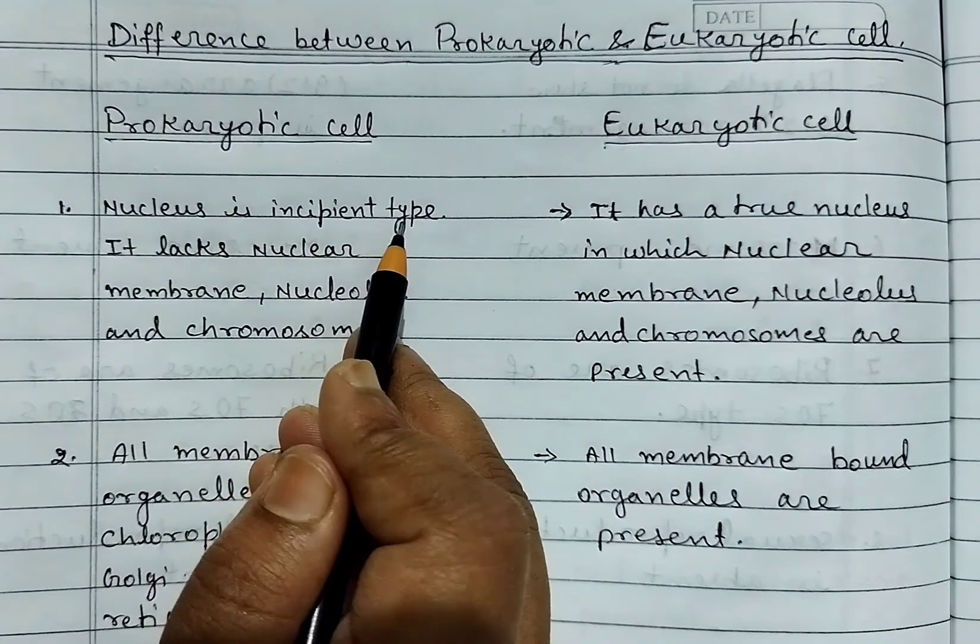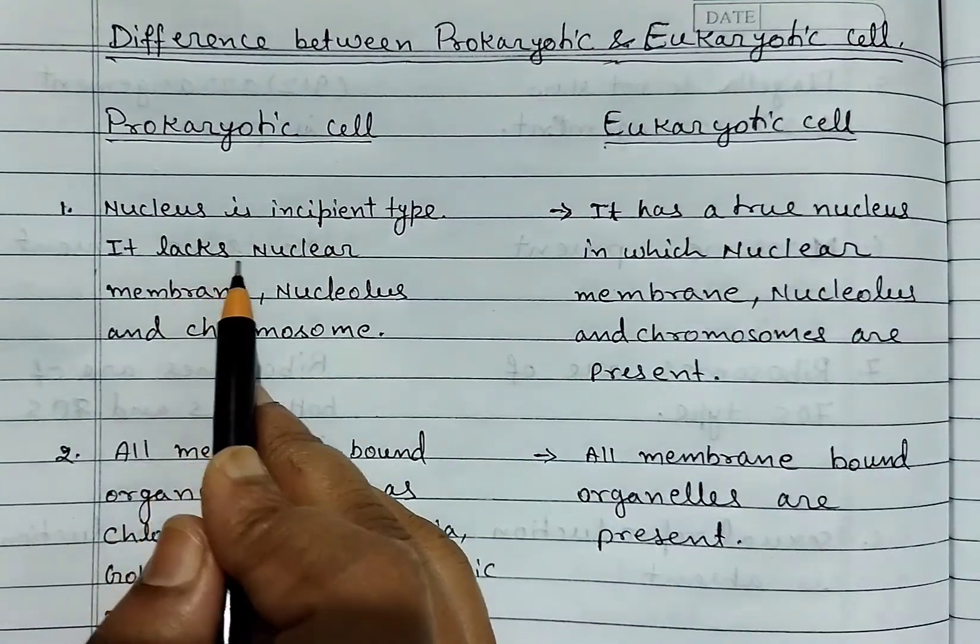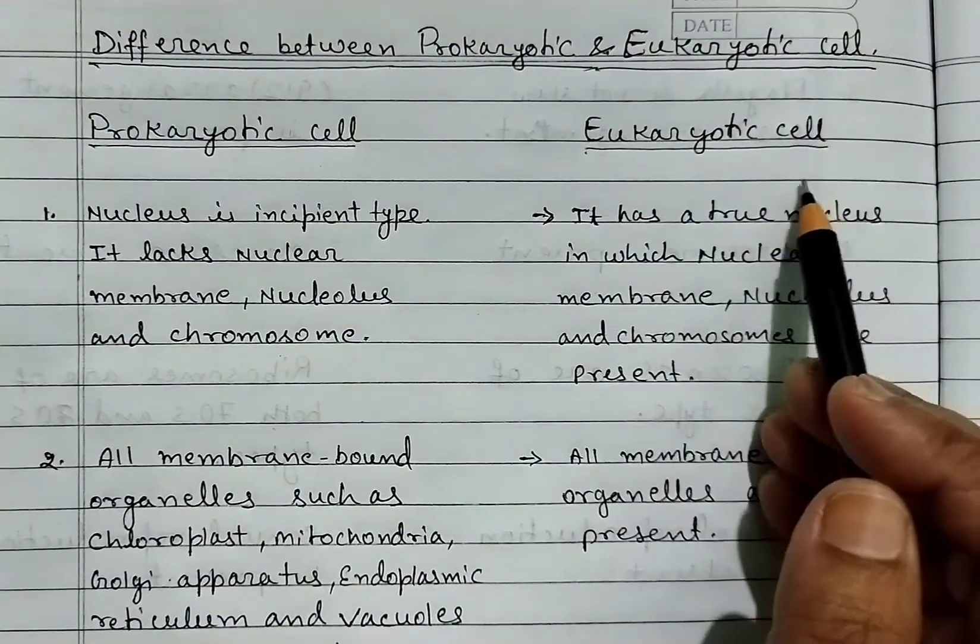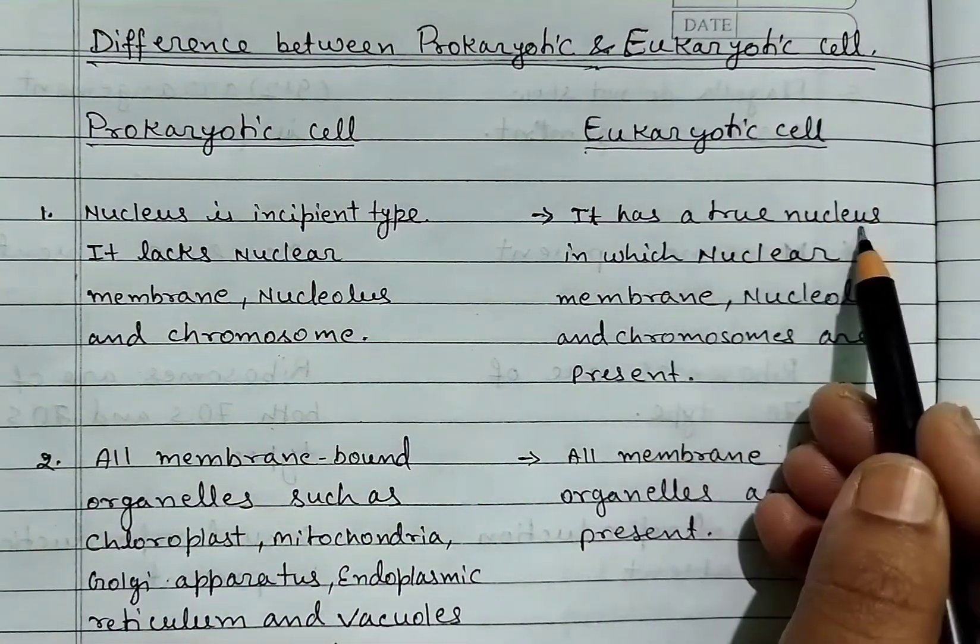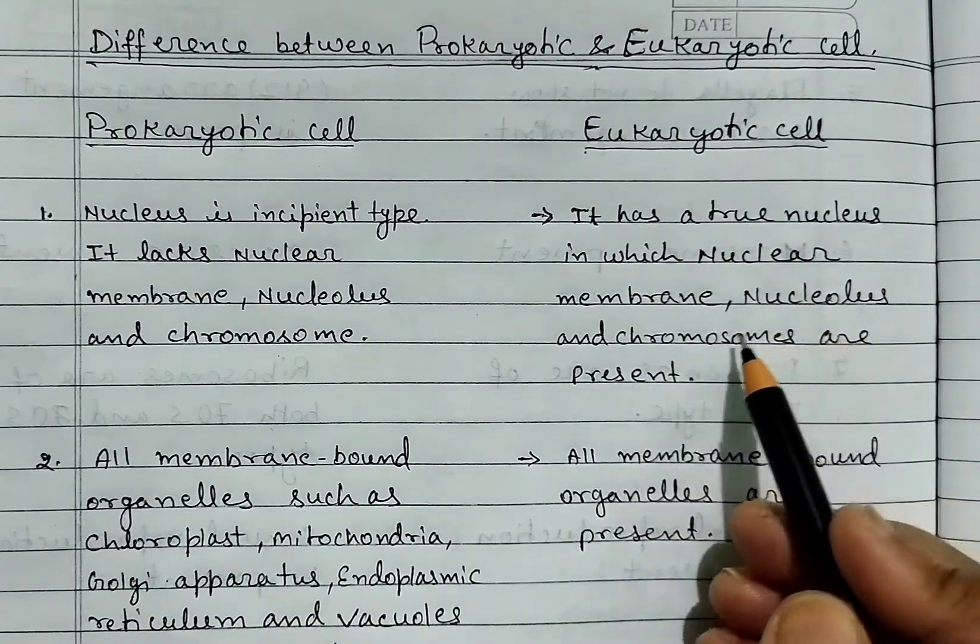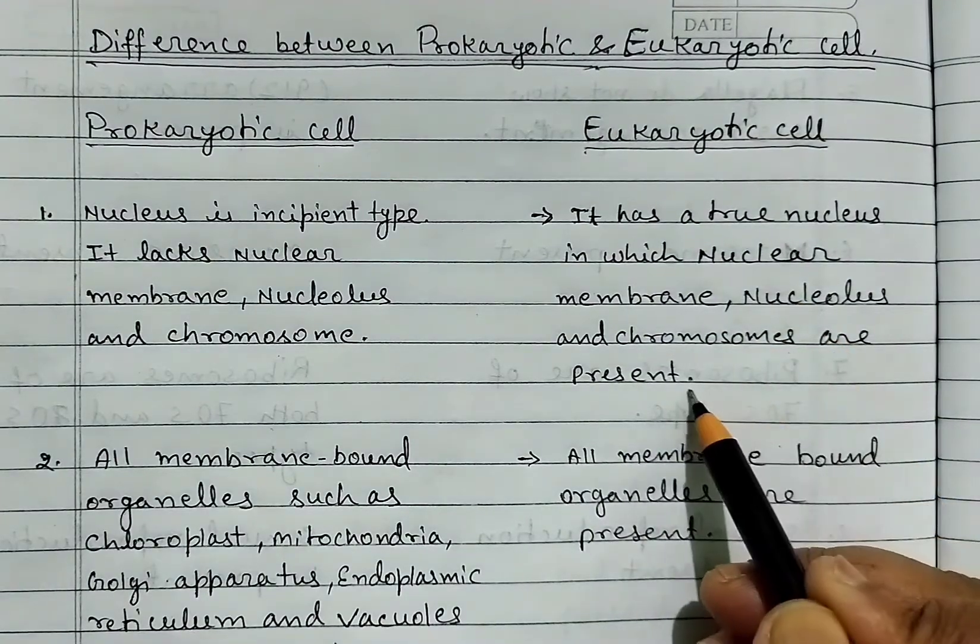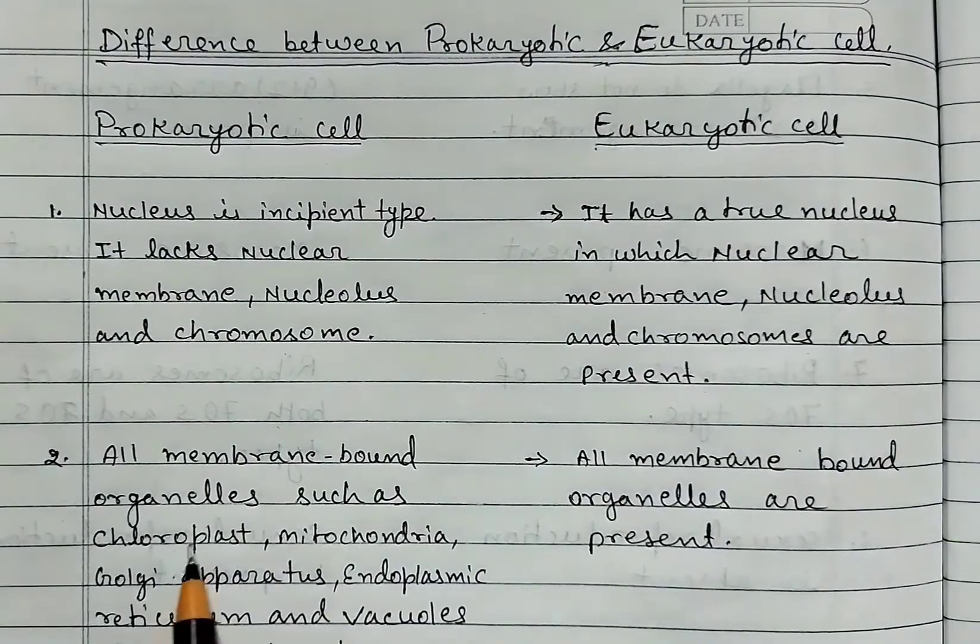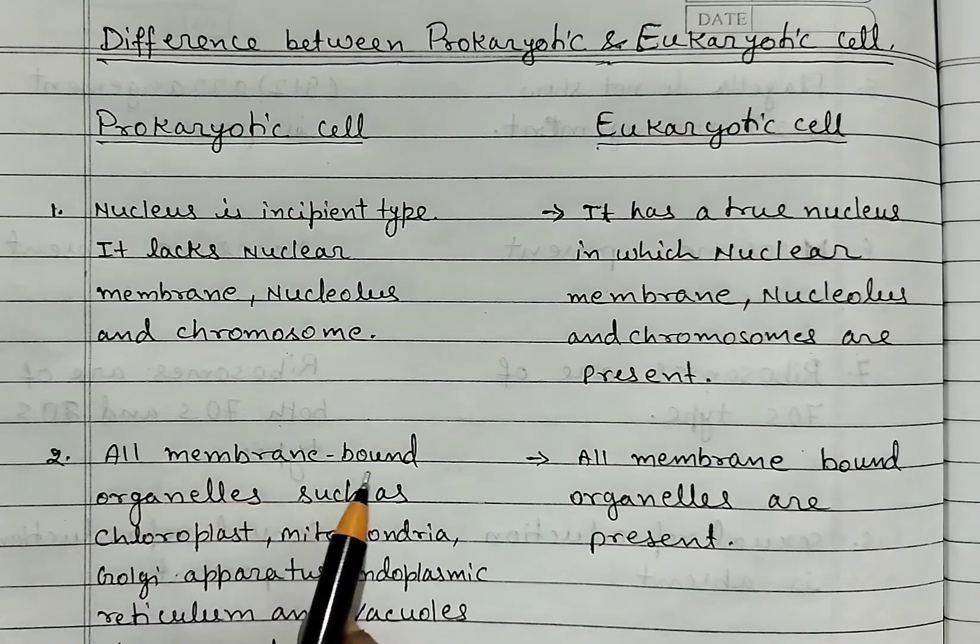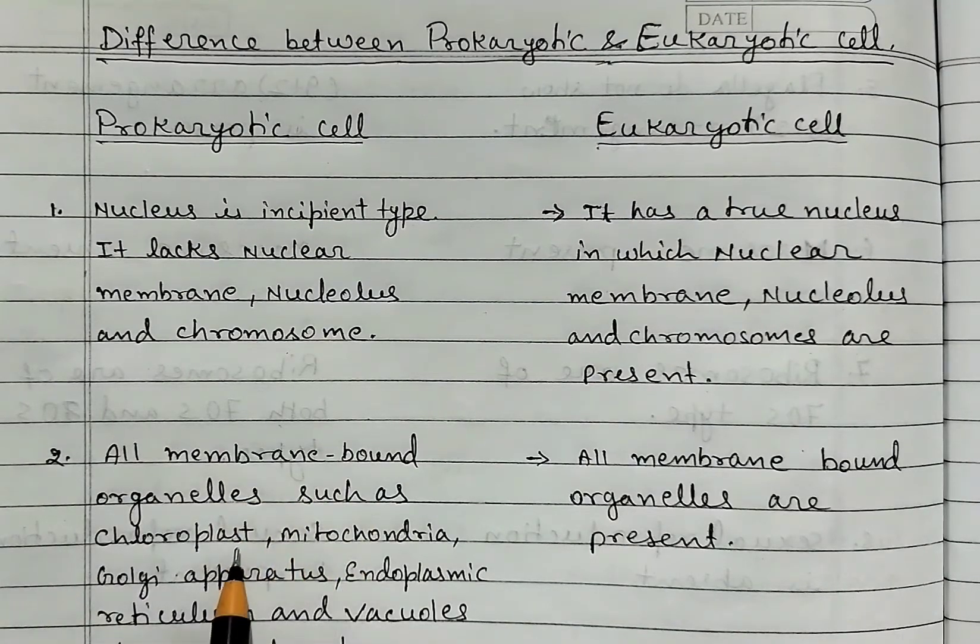It lacks the nuclear membrane, nucleolus, and chromosome. In eukaryotic cell, it has a true nucleus in which nuclear membrane, nucleolus, and chromosomes are present. Second, all membrane-bound organelles such as chloroplast, mitochondria, Golgi apparatus, endoplasmic reticulum, and vacuoles are absent in prokaryotic cell.